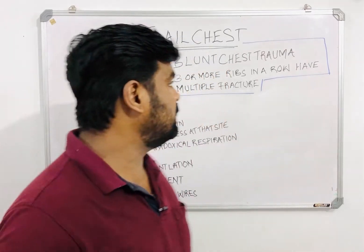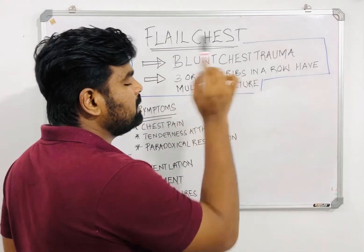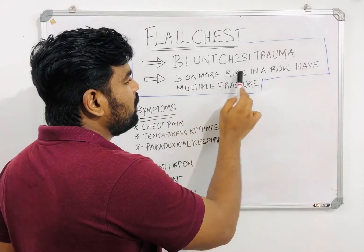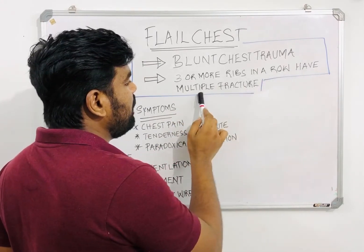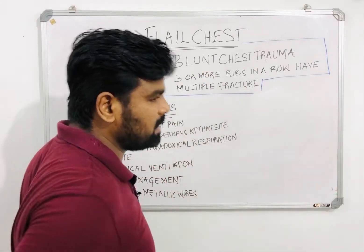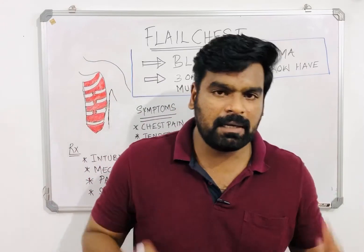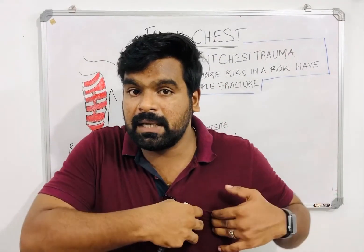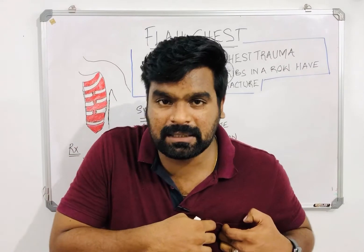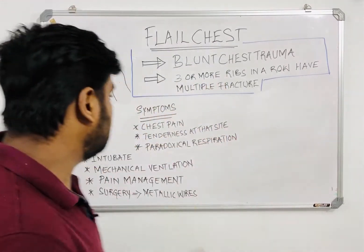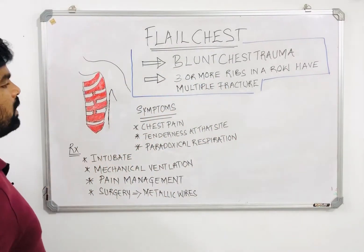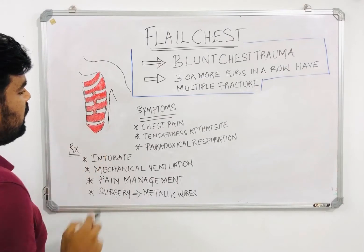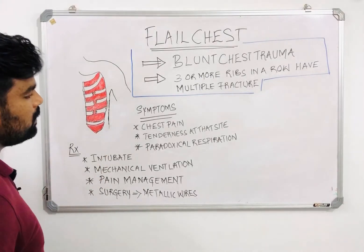You can see here, it is one type of blunt chest trauma. Three or more ribs in a row have multiple fractures. Those multiple rib fractures will puncture inside the lungs and there is a chance for hemothorax. These multiple ribs will be punctured and there is a chance for hemothorax.